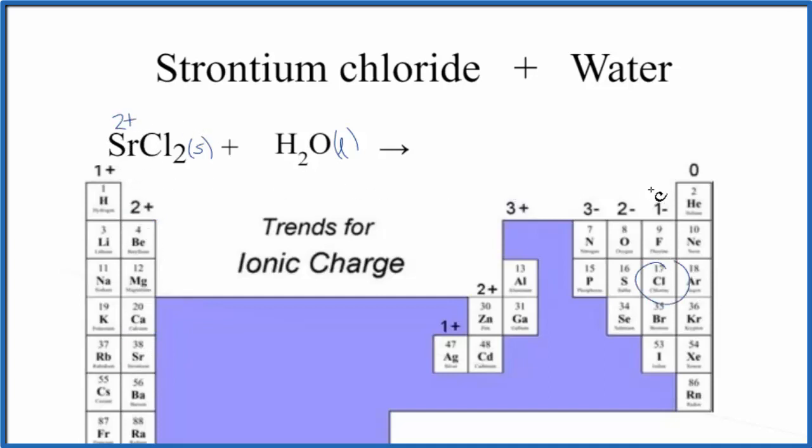Chloride ion, one minus. So we put a little minus up here for the one minus. So we know the charge on the ions. Now we can split it apart.